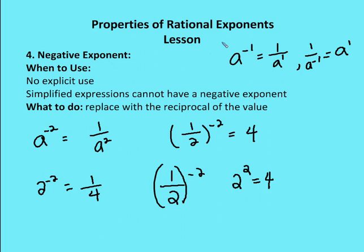Negative exponent: a to the negative 1 is equal to 1 over a. All I'm doing is taking the reciprocal of the value attached to the exponent. So a to the negative 2 is the same as 1 over a squared. 2 to the negative 2 equals 1 over 2 squared, or 1 over 4. And 1 over 2 to the negative 2 gives the reciprocal: 2 over 1, squared, which equals 4.